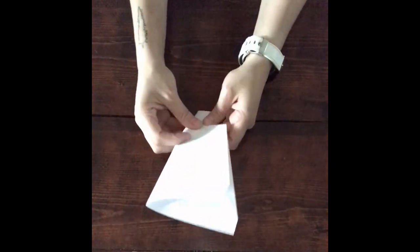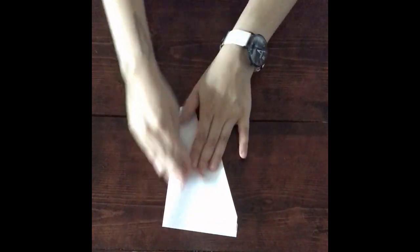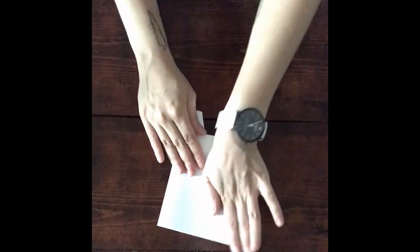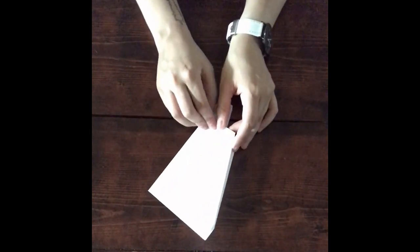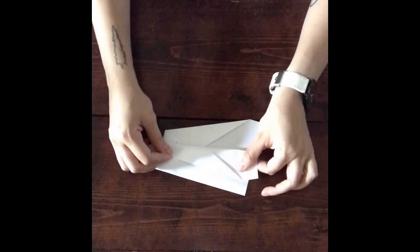Now you're going to fold the whole plane in half with the folds you just made on the inside. Finally, fold the wings down. You will feel resistance in the paper if you make the wings too large.